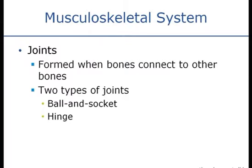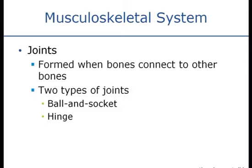Joints are formed when bones connect to one another, and there are two basic types of joints: ball and socket — which is what we see in the shoulder and in the hip — and hinge joints, which is what we see in the fingers.